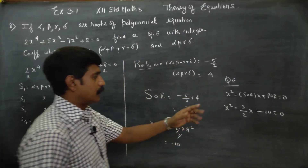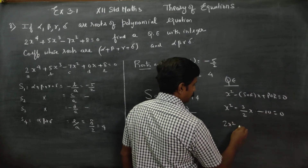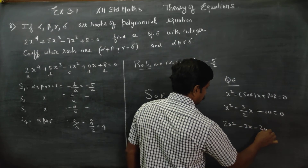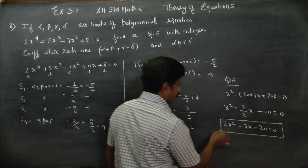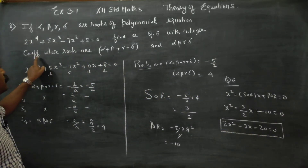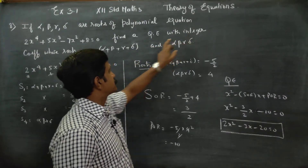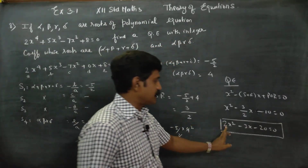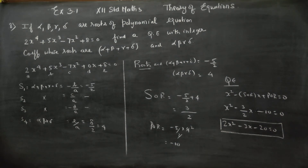Multiply throughout by 2. Your answer will be 2x² - 3x - 20 = 0, which is the required equation. We multiplied by 2 so that the roots have integer coefficients. Thank you.